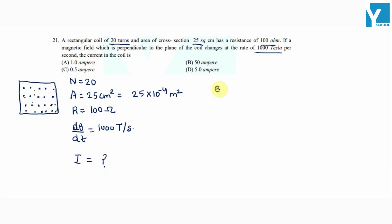We know the magnitude of induced EMF is equal to dΦ/dt. Now, Φ is B into A. Actually, this flux is B dot A. Because the magnetic field is at 90 degrees, it simply will be B into A.